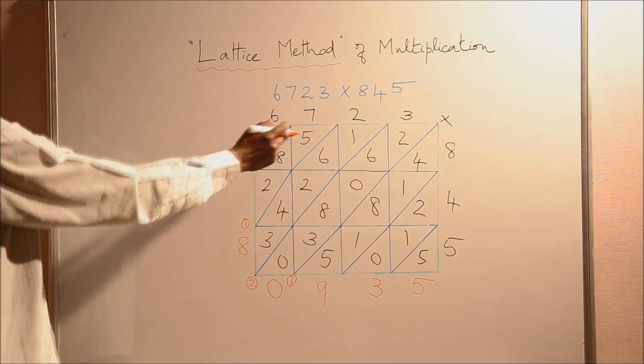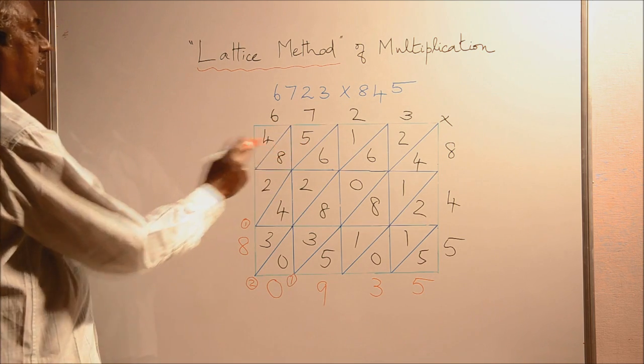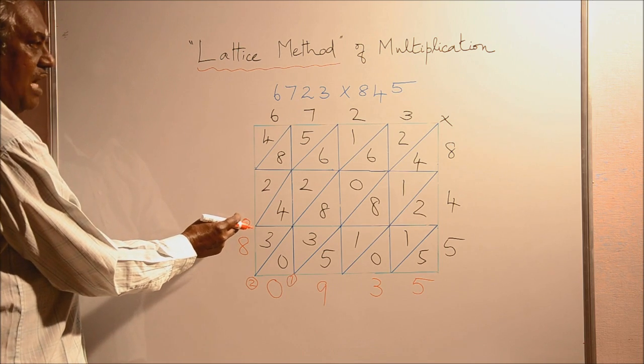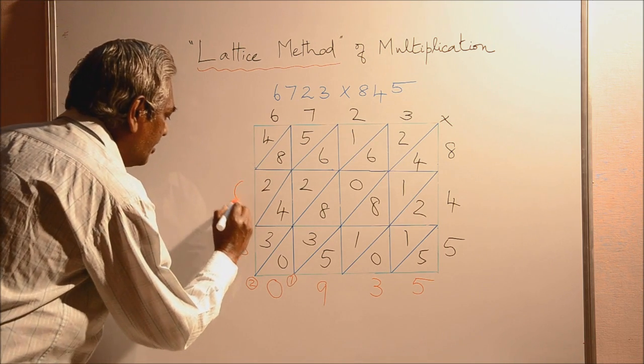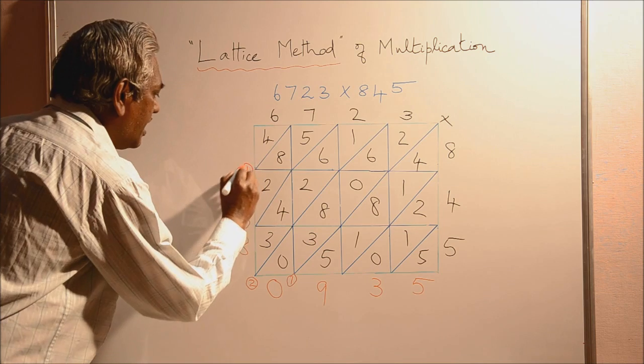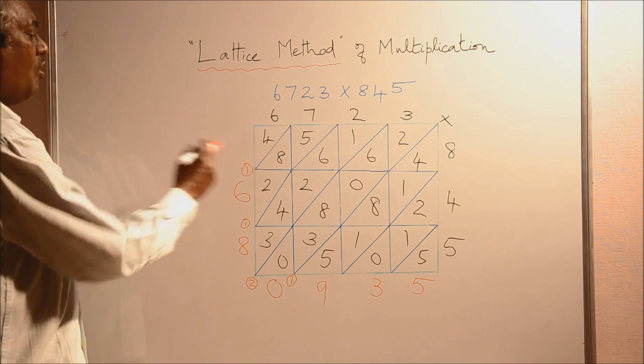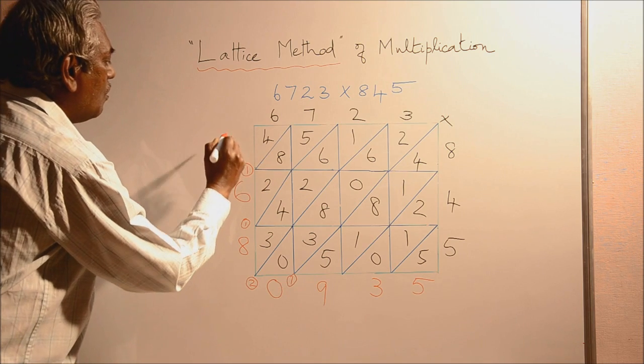Then to the next diagonal, we are moving. 5 plus 8, 13. 13 plus 2, 15. Then plus 1, 16. We write 6 here. And this 1 to be carried over. Already we are adding 4. So 4 plus 1, we have 5.